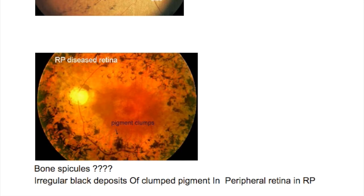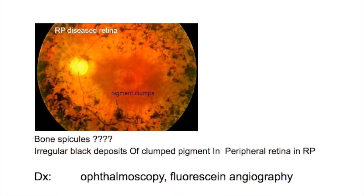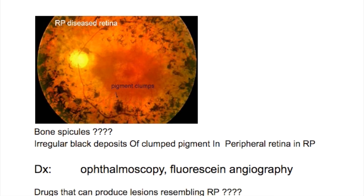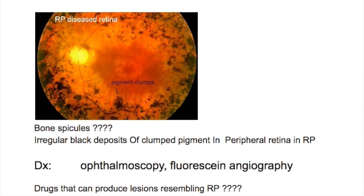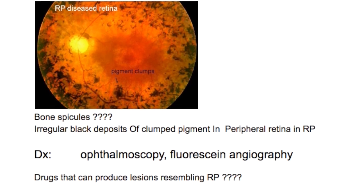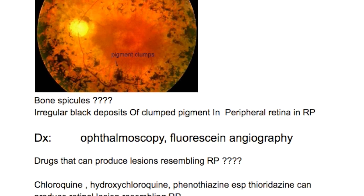Drugs that can produce lesions resembling retinitis pigmentosa include chloroquine, hydroxychloroquine, and phenothiazines — especially thioridazine — which can produce a retinal lesion resembling retinitis pigmentosa.